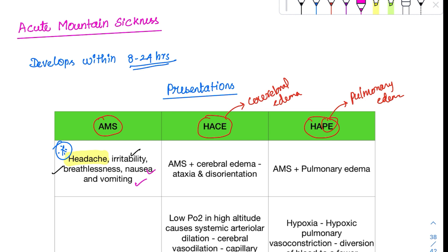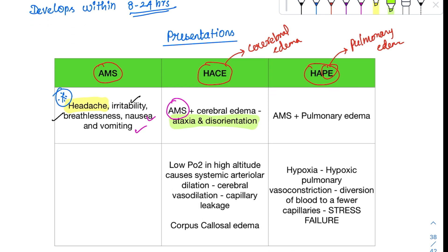HASE includes all features of common AMS plus cerebral edema. The person has ataxia and disorientation. There's huge cerebral vasodilation because of hypoxia. The brain doesn't want to compromise blood supply, so it vasodilates extensively. This causes capillary leakage, causing corpus callosal edema. The most common region involved is corpus callosal edema.